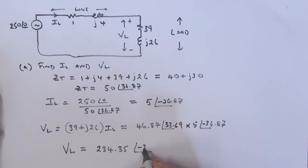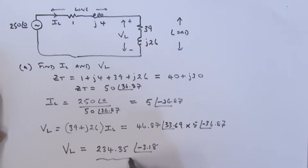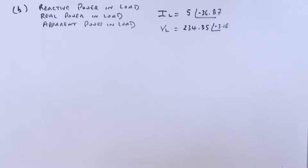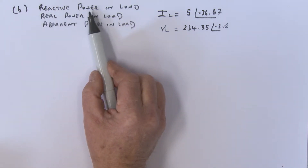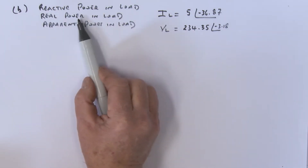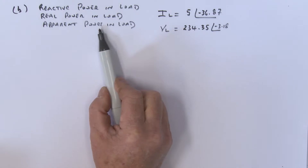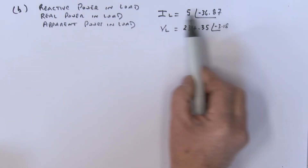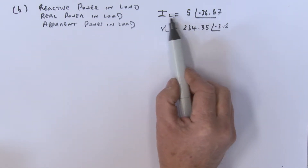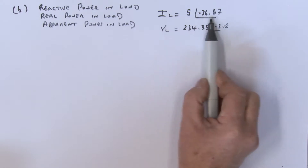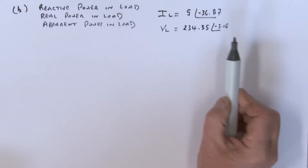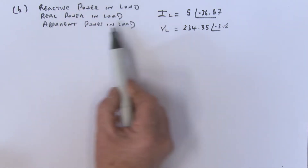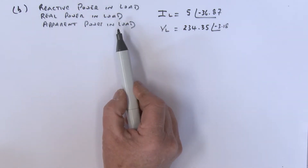Multiplying these out and dealing with the angles gives us VL equal to 234.35 at an angle of minus 3.18 degrees. That is VL. In Part B, we need to find the reactive power, real power, and apparent power in the load. Here is the current IL and the voltage VL which we just found.